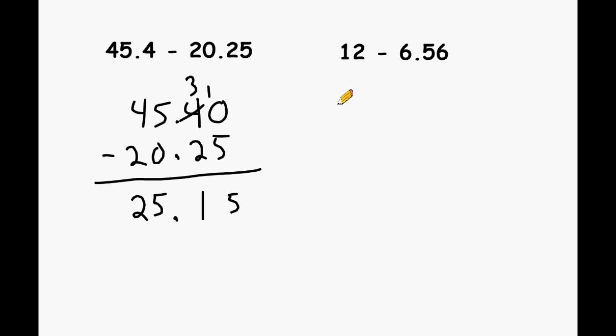And one last example. We have 12 and right away I am going to write 12.00. Because I notice with the second number 6 and 56 hundredths we have two place values after our decimal. And we have to subtract 6 and 56 hundredths from 12.